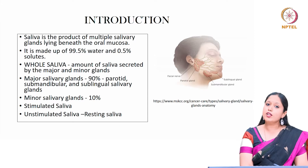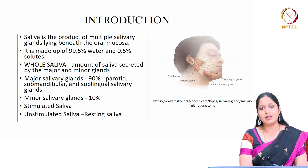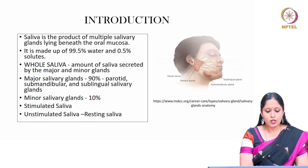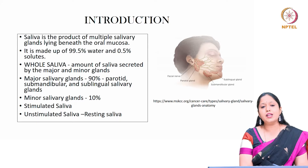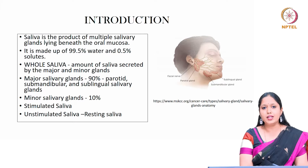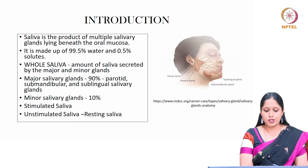There is something called whole saliva, which means the amount of saliva secreted by both major and minor salivary glands. The major salivary glands include the parotid gland, submandibular gland, and sublingual glands, and altogether these glands contribute about 90% of total saliva. Minor salivary glands contribute about 10%.